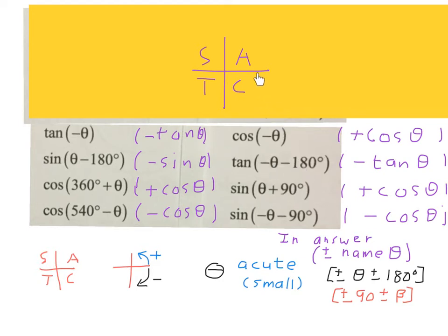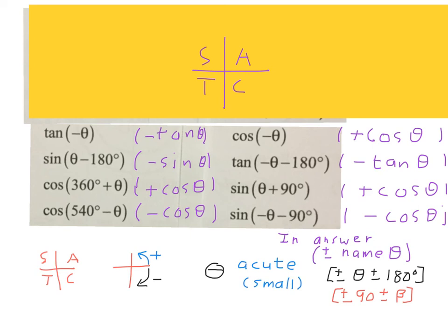For minus theta minus 180: start at minus theta, then go minus 180 — third quadrant — sine is positive there but tan is negative, so we put a negative. For sin(theta plus 90): the name changes to cosine. Check the quadrant — start at zero, go theta plus 90 — second quadrant — sine is positive, so we put a positive. For sin(negative theta minus 90): name changes to cosine. Go from zero, minus theta minus 90 — third quadrant — sine is negative there, so we put a negative. We do not look at minuses inside brackets; we physically let the angle tell us which quadrant we are in, then decide the sign.